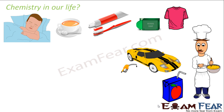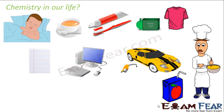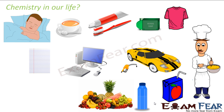When we go to work or school, we drive or take a school bus, and the petrol or diesel used to run vehicles is nothing but a chemical compound. At school, the notebook we write in is made of cellulose — a chemical compound. Computers are made of plastics and other materials that require a good knowledge of chemistry. The plastic water bottles we use and the fruits and vegetables we eat are also chemical compounds.